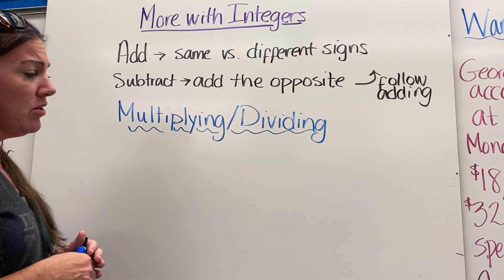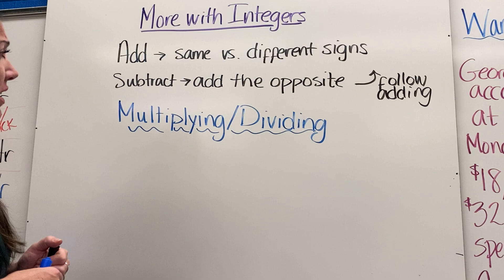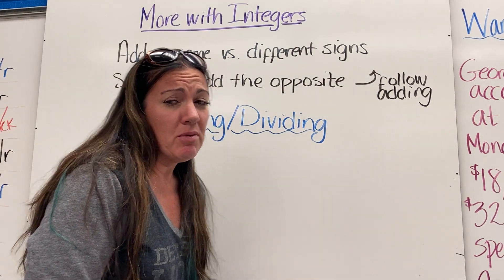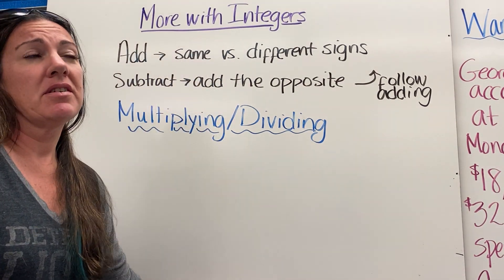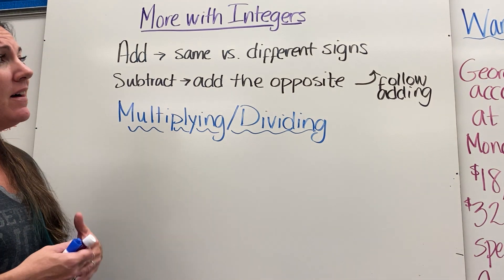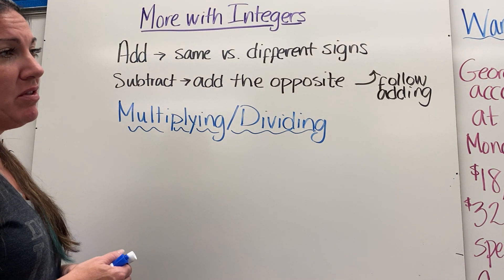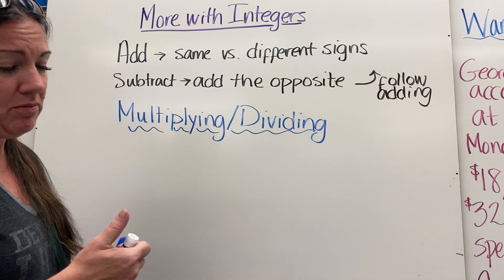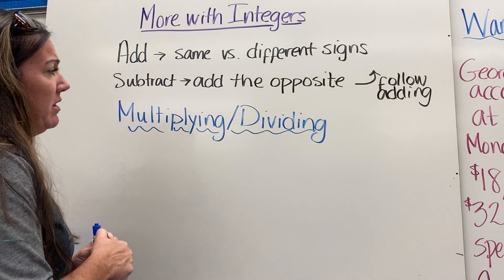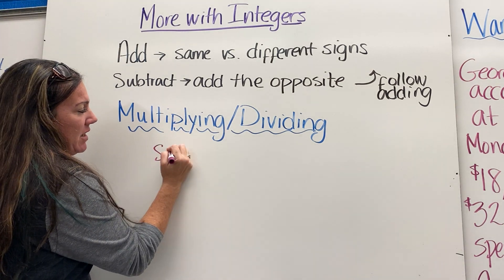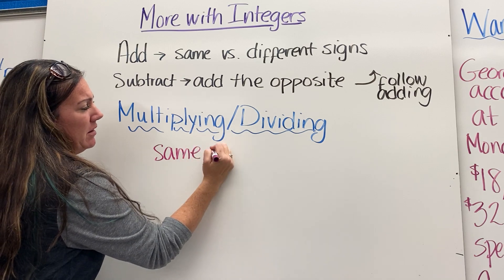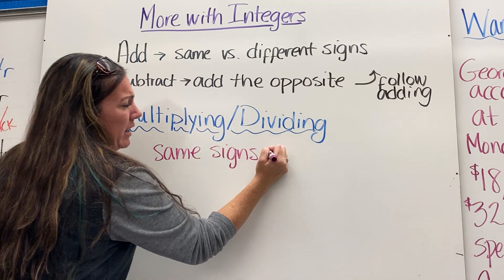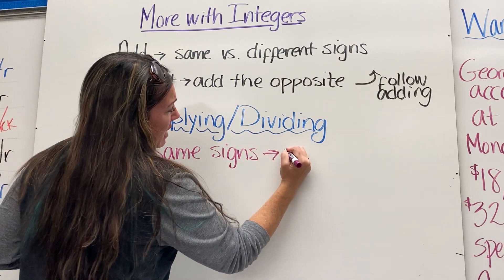Today we're going to look at multiplying and dividing — what are the rules when we multiply and divide integers? Similar to adding, we first look at what the signs are of the numbers we're multiplying. If they are the same signs, then our answer is always positive.